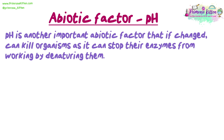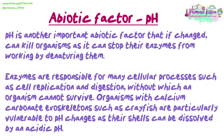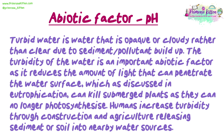pH is another important abiotic factor that, if changed, can kill organisms by denaturing their enzymes. Enzymes are responsible for many cellular processes such as cell replication and digestion, without which an organism cannot survive. Organisms with calcium carbonate exoskeletons, such as crayfish, are particularly vulnerable as their shells can be dissolved by an acidic pH. Turbid water — water that is opaque or cloudy due to sediment or pollutant build-up — reduces the amount of light penetrating the water surface, which can kill submerged plants. Humans increase turbidity through construction and agriculture releasing sediment into nearby water sources.